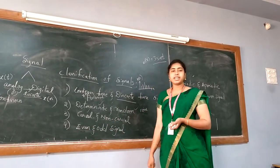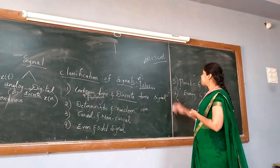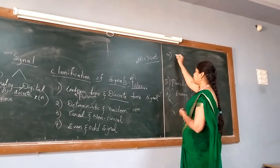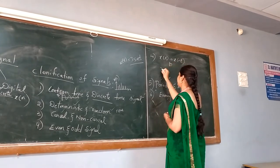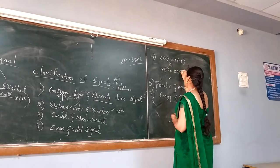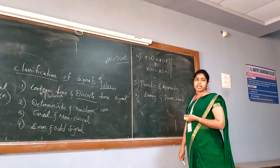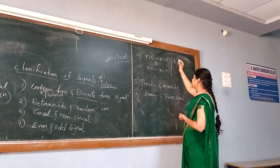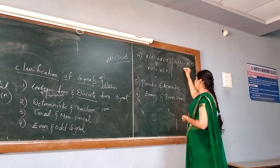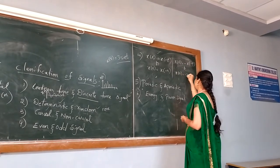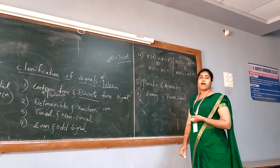The signal classification is even and odd signal. Even signal: whenever you are able to prove that X of T is equal to X of minus T, or for a discrete type signal, X of N is equal to X of minus N, then you can say this particular signal is an even signal. And there is another type called odd signal: when you are able to prove that X of T equals minus X of minus T, or for discrete signal, minus X of minus N — this indicates that it is an odd signal.